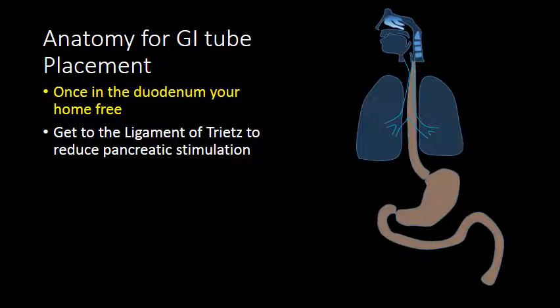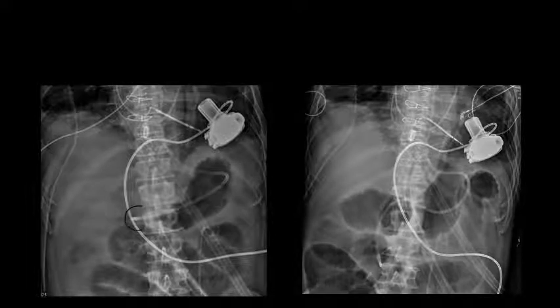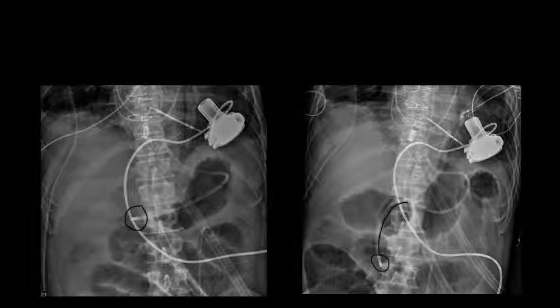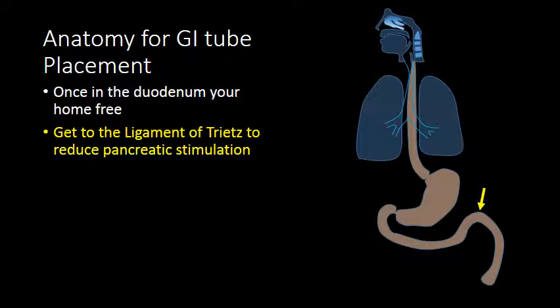Once a feeding tube has passed the pylorus and reached the duodenum, it is usually much easier to advance more distally. Here we have an example of a peripyloric catheter with the tip in the antrum or first portion of the duodenum. The subsequent radiograph shows advancement down the first and second portions of the duodenum, terminating near the junction of the second and third portions — adequate positioning for feeding in patients at risk for aspiration. However, the most ideal placement is for the tip to be at the ligament of Treitz, because positioning in the first or second portion of the duodenum places the catheter at risk for retraction into the stomach, and more distal positioning reduces pancreatic stimulation, important in patients with pancreatitis.